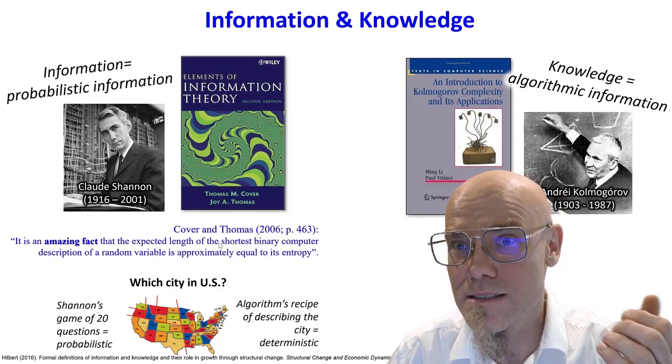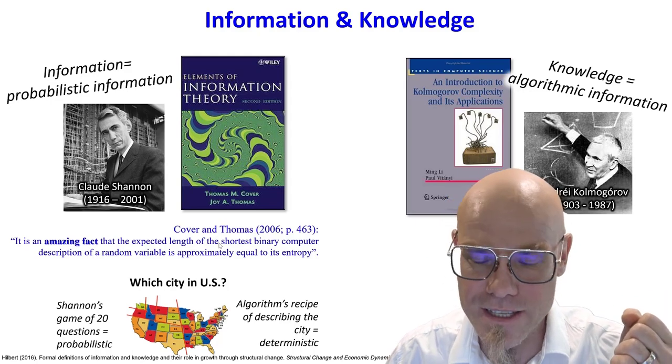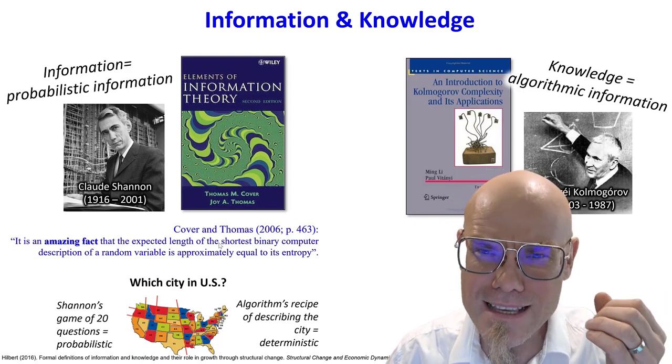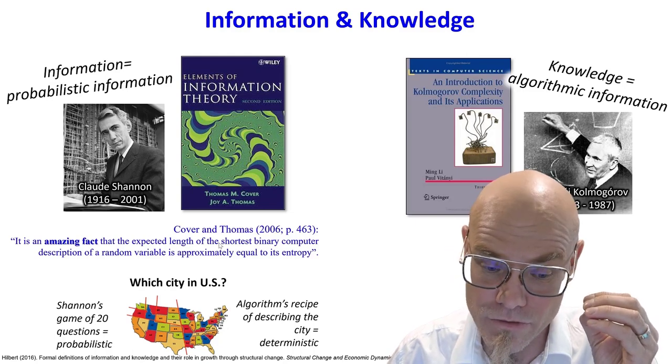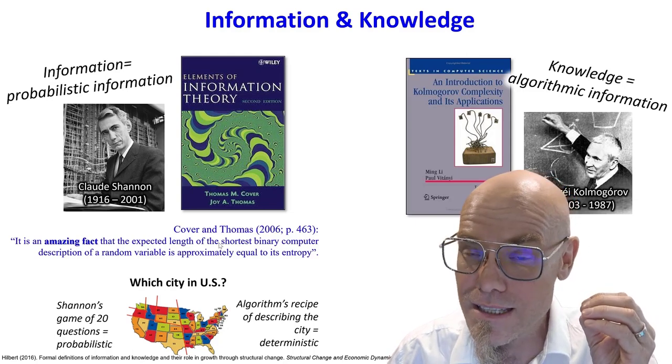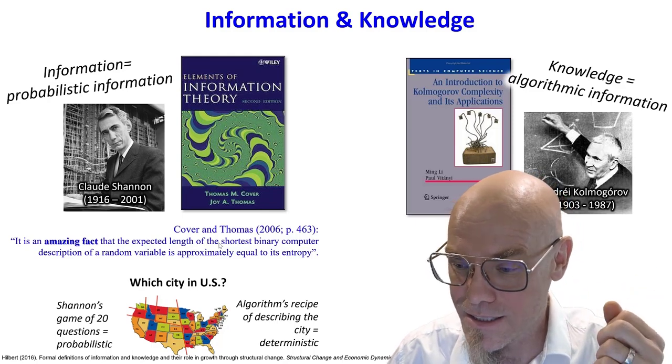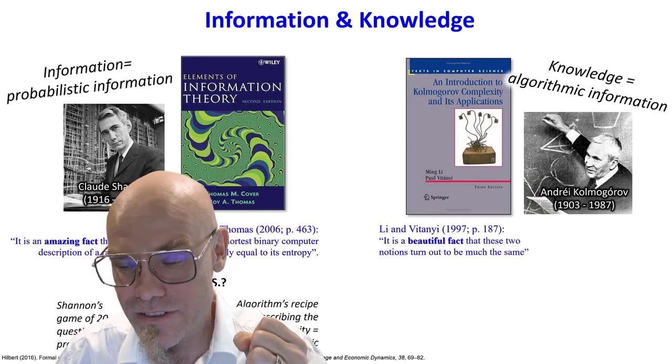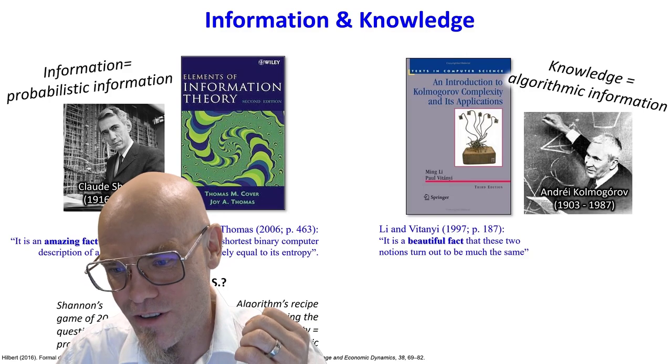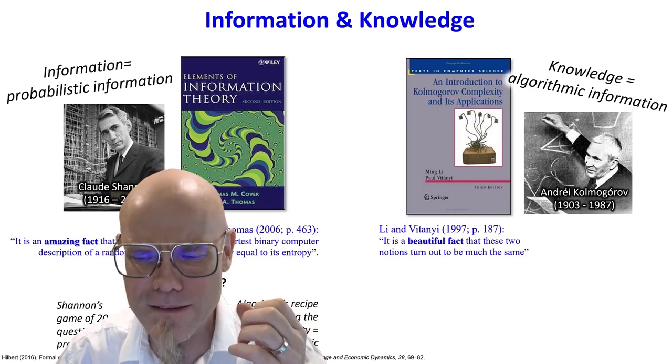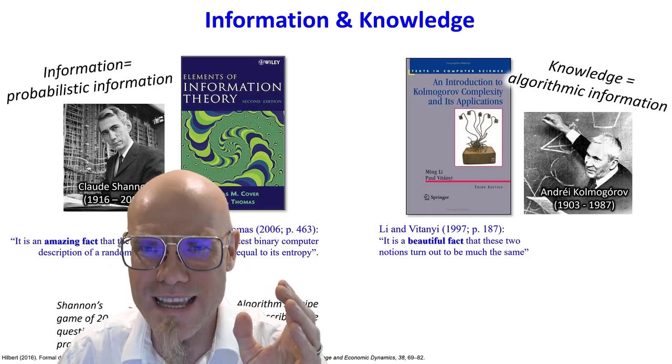So in the words of Cover and Thomas, the authors of the standard textbook on information theory, they say, it is an amazing fact that the expected length of the shortest binary computer description of a random variable is approximately equal to its entropy. Entropy is the measure of probabilistic information. And in the words of Li and Vitanyi, the authors of the leading textbook on Kolmogorov complexity, they say it's a beautiful fact that these two notions turn out to be much the same.